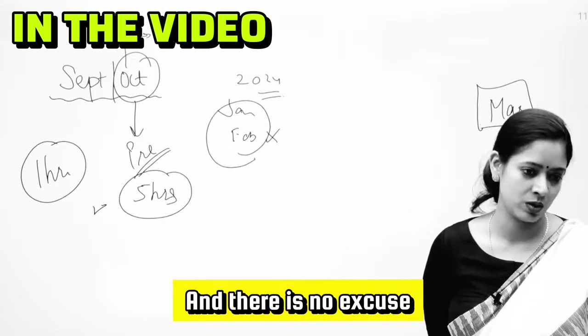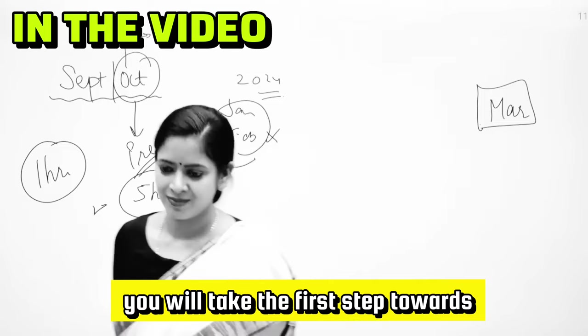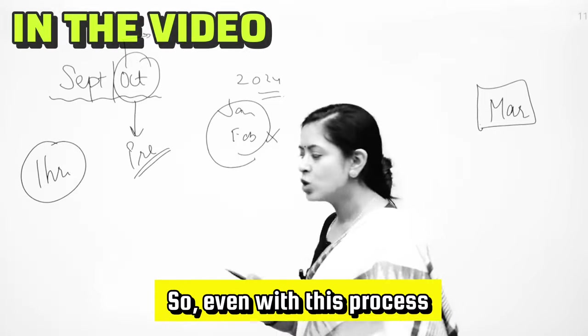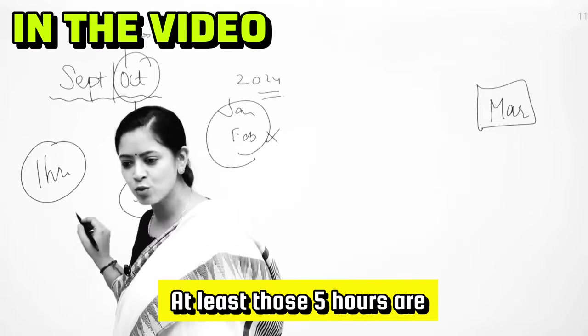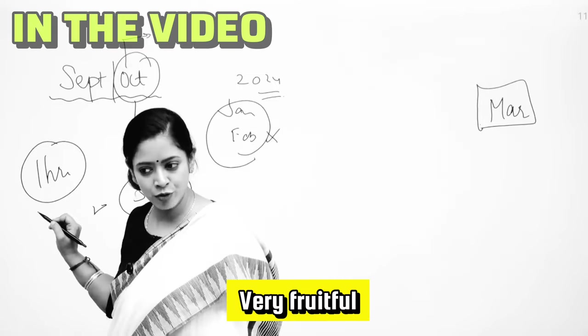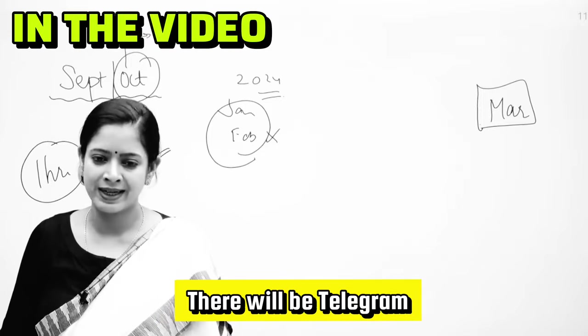And there is no excuse, and the moment you will do that, you will take the first step towards starting to deserve a selection. So even with this process, if you study for five hours, at least those five hours are fruitful, very fruitful. Timer in phone, there will be a WhatsApp, there will be a Telegram, there will be a call.